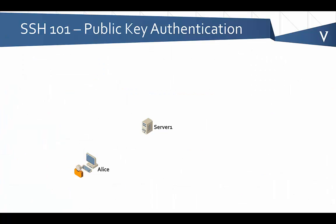Here we've got Alice. She's an application administrator, and she needs access to Server 1 — she's going to be doing some administration there. Bob, who's the administrator for Server 1, is going to set up SSH on there so that when she logs in, she can log in securely and her password's not seen over the wire. When he sets up SSH on the server, it creates a public and private key pair, and that's to identify the server and enable secure communications to and from the server.